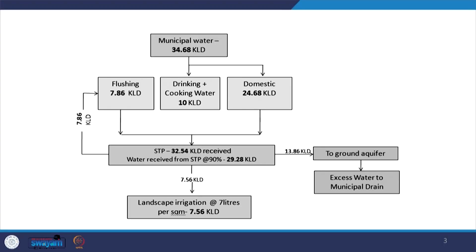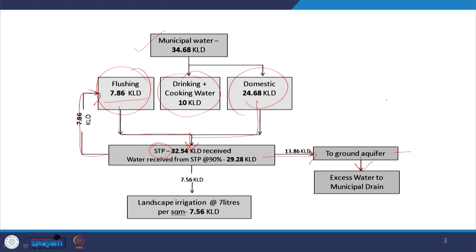This is a sample water balance chart for a building. Usually we will have a municipal water supply from where water is coming, and this water will be used for different purposes. Flushing is a non-potable use; drinking and cooking water is a potable use; and domestic water supply is also a potable use. Flushing and domestic uses result in sewage and grey water, which can go into an STP, and the treated water can be used for non-potable needs or recharged to a ground aquifer.